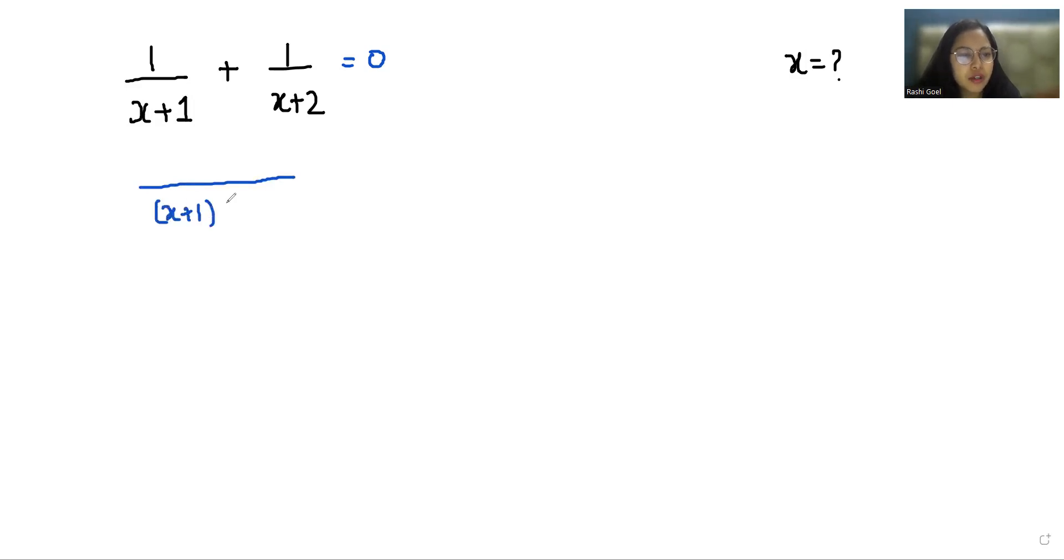So we can write x plus 1 times x plus 2 and in this case the numerator becomes x plus 2 and in this case the numerator become x plus 1 is equals to 0. Now x plus 2 plus x plus 1 by x plus 1 times x plus 2 is equals to 0.